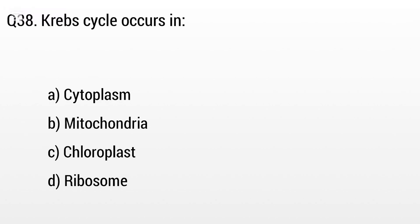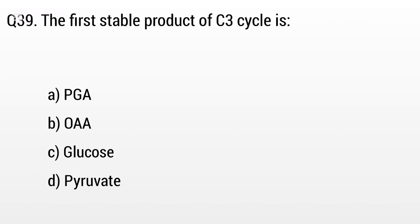Question 38. Krebs cycle occurs in: Option A: Cytoplasm, B: Mitochondria, C: Chloroplast, D: Ribosome. The right answer is option B, Mitochondria.